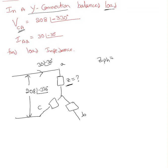To find the phase impedance, we need to know the phase values: VPH over IPH — phase voltage over phase current. Whichever phase it is, we have to use the same phase values. If this is phase A, we have to use the phase A values. So to find phase A impedance, it must be VAN over IAN.